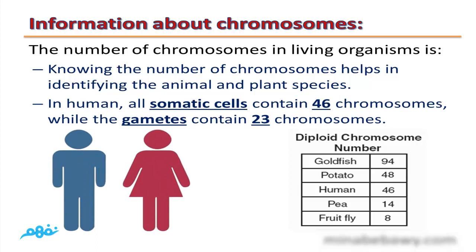In humans, all somatic cells contain 46 chromosomes, while the gametes contain 23 chromosomes.